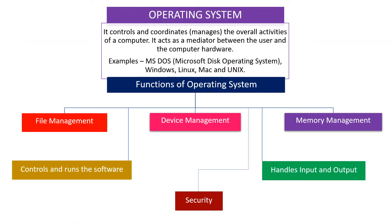Operating system. An operating system is a system software. It controls and coordinates — which means manages — the overall activities of a computer. It acts as a mediator between the user and the computer hardware.